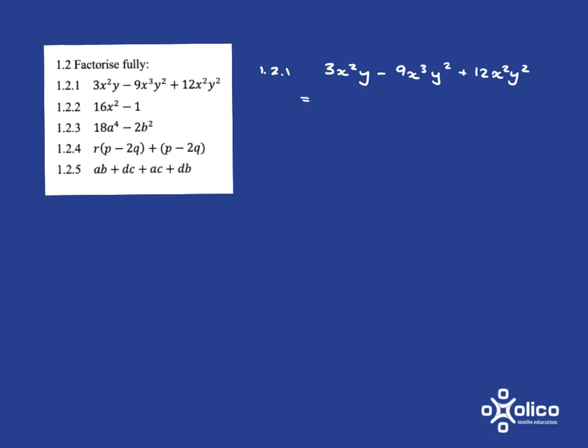So here, if I have a look for the numbers, it's 3, 9 and 12, so the highest common factor there is going to be a 3. Then the x's, I've got an x squared, and we put a 3 down first. Then I've got an x squared, an x cubed, and an x squared, so the most I can take out is x squared, and then the y's, y, y squared, y squared, the most I can take out is a y.